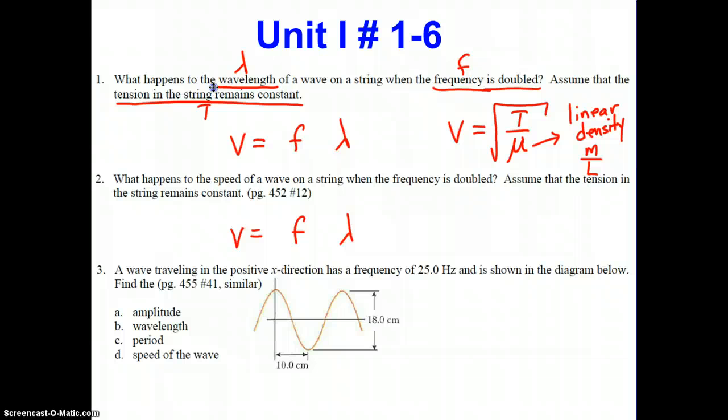So let's take a look at what's going on. Assume that the tension of the string remains constant. If the tension is not going to change, that means the speed remains constant. So we come to v equals f lambda. Our speed remains constant, they've doubled the frequency. So mathematically, what has to happen to the wavelength? The wavelength has to be halved. So there's your answer to number one: the wavelength becomes halved.